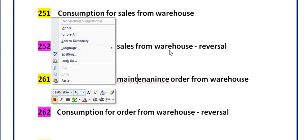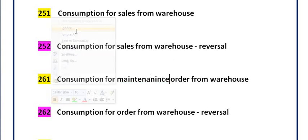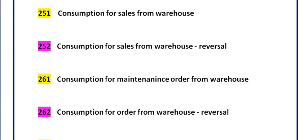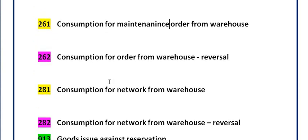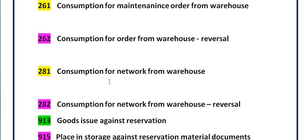Movement type 261 is for goods issue against a maintenance order from the warehouse. For inventory used for maintenance purposes, you first create a notification against the equipment, then create a maintenance order using the notification plan. The inventory for the equipment's maintenance is planned, a reservation is generated in the background once the order is released, and you perform goods issue in MIGO against that reservation — movement type 261. Movement type 262 is the reversal of 261.